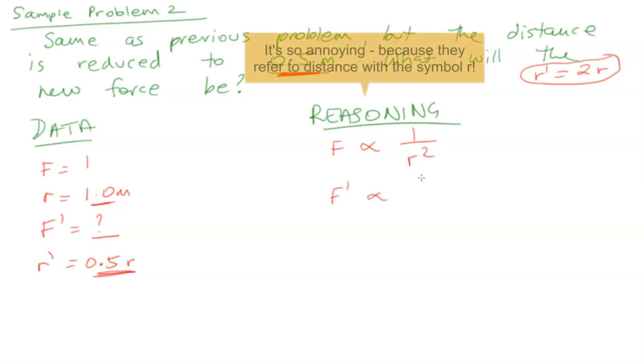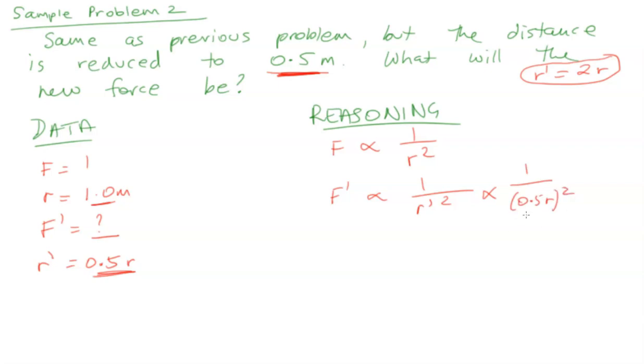So we want to know what the new force is. So we substitute in the new radius, which is now 0.5 R. We need to square both of these. I'll put it here. So we end up with 1 over 0.5 times 0.5 is 0.25, times the 1 over R squared. So this is what our factor is going to be. So 1 divided by 0.25 tells us that it's 4 times that. Therefore, the force, the new force will be a factor of 4 times the original force.